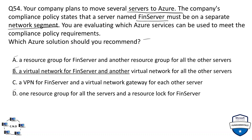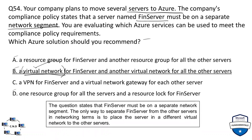The correct option is B — a virtual network for fin server and another virtual network for the other servers. A virtual network provides the network segmentation concept, keeping fin server and other servers separate. The question states fin server must be on a separate network segment, and the only way to achieve this in networking terms is to place the server in a different virtual network.